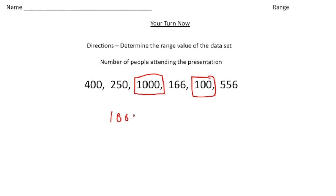So to get the range, we need to do 1000 minus 100, which would give us 900. So 900 is our range value. All right, how'd you do?